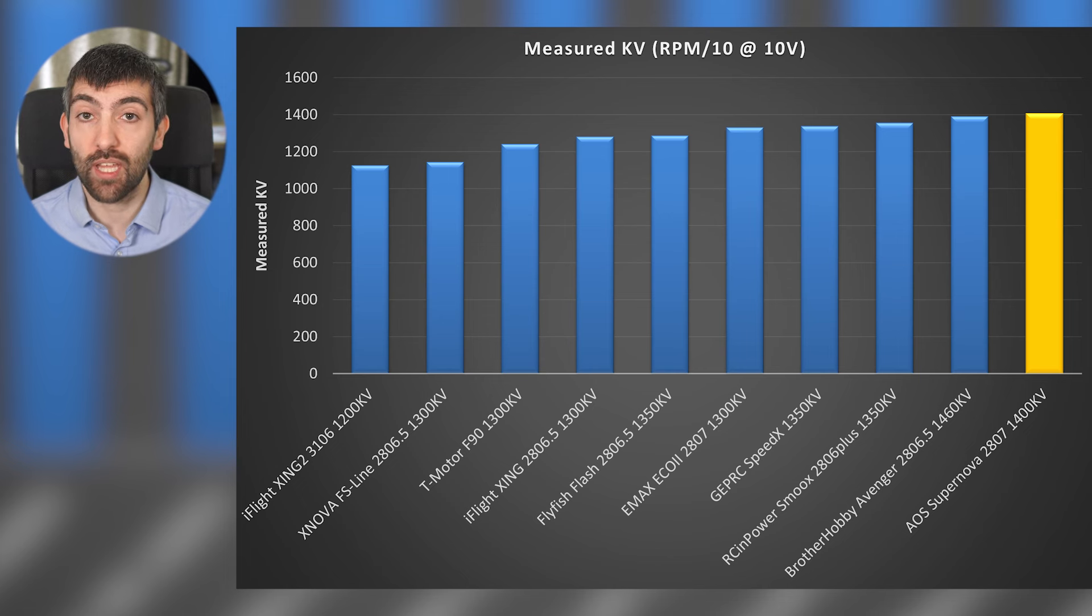Compared to the other 7 inch motors that I've tested, the Supernova has a higher kV than all of them, and that's no accident either. By optimizing the magnetic design of the motor, we're able to achieve slightly better efficiency, and I like to use that efficiency to push the kV a little bit higher and get more performance out of the motor.